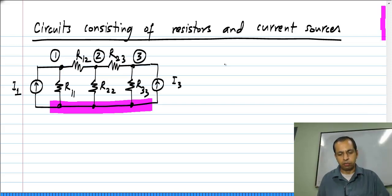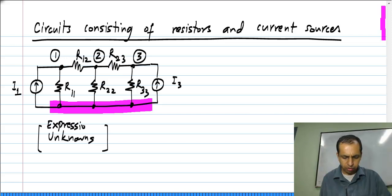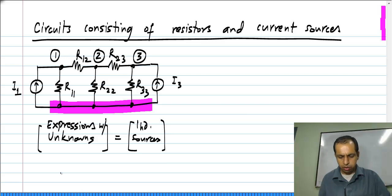The way we will set up all of our equations is like this. We will have some relationship between unknowns, some expression containing unknowns. And that will be equal to the independent sources, which are known. And by solving for this, we will solve for the unknowns.